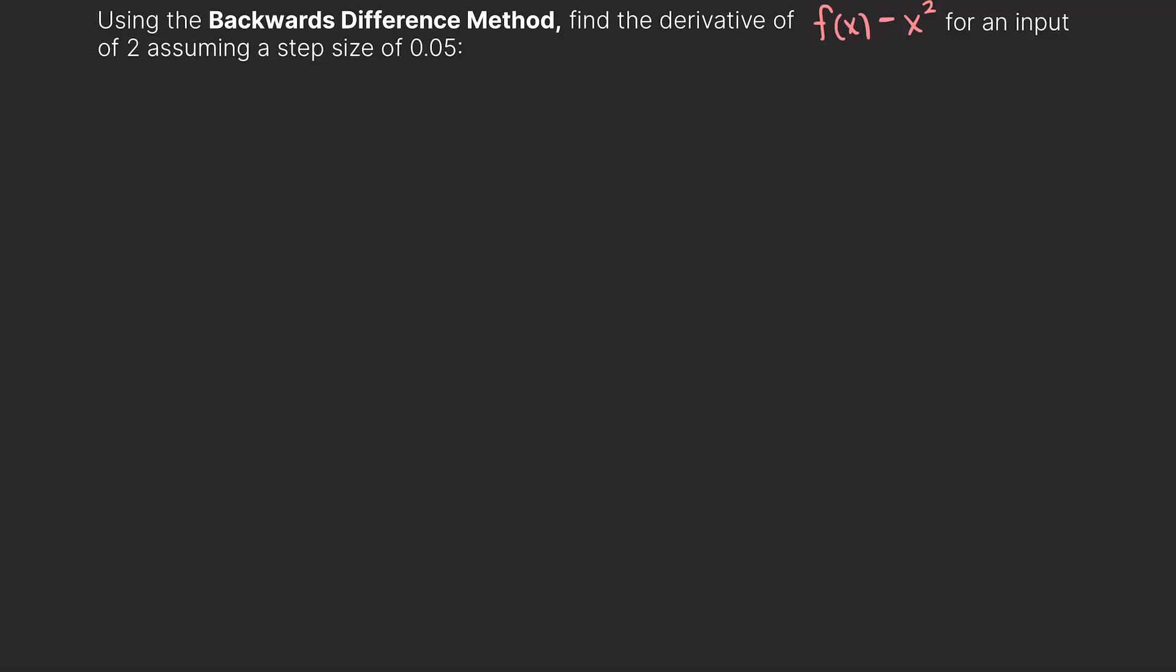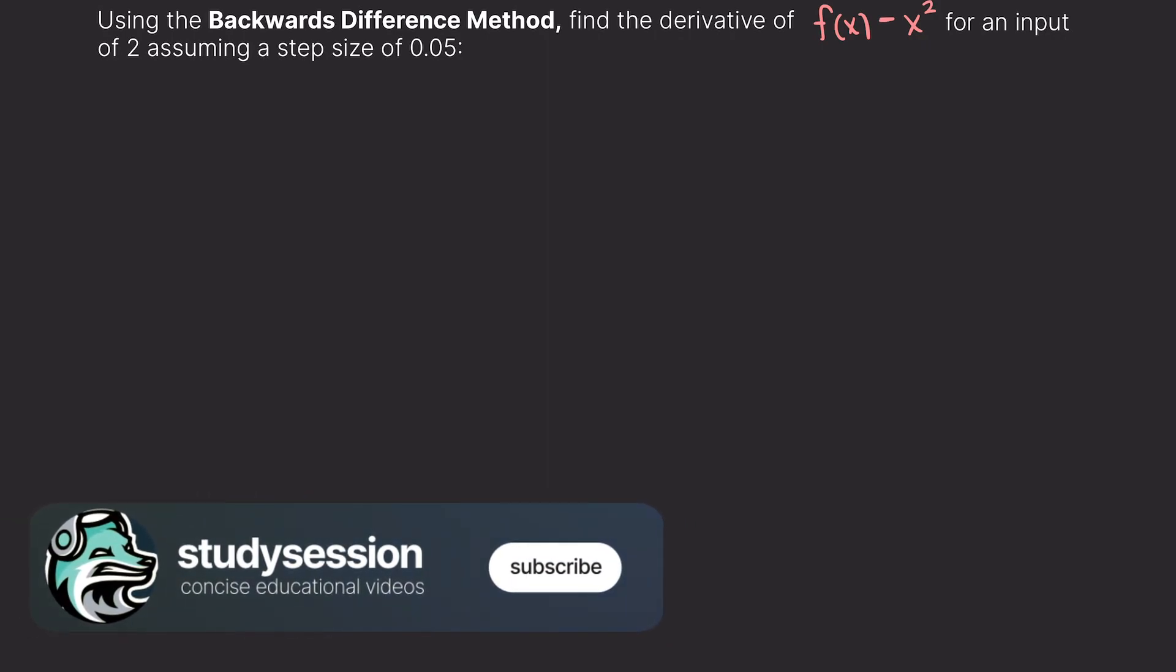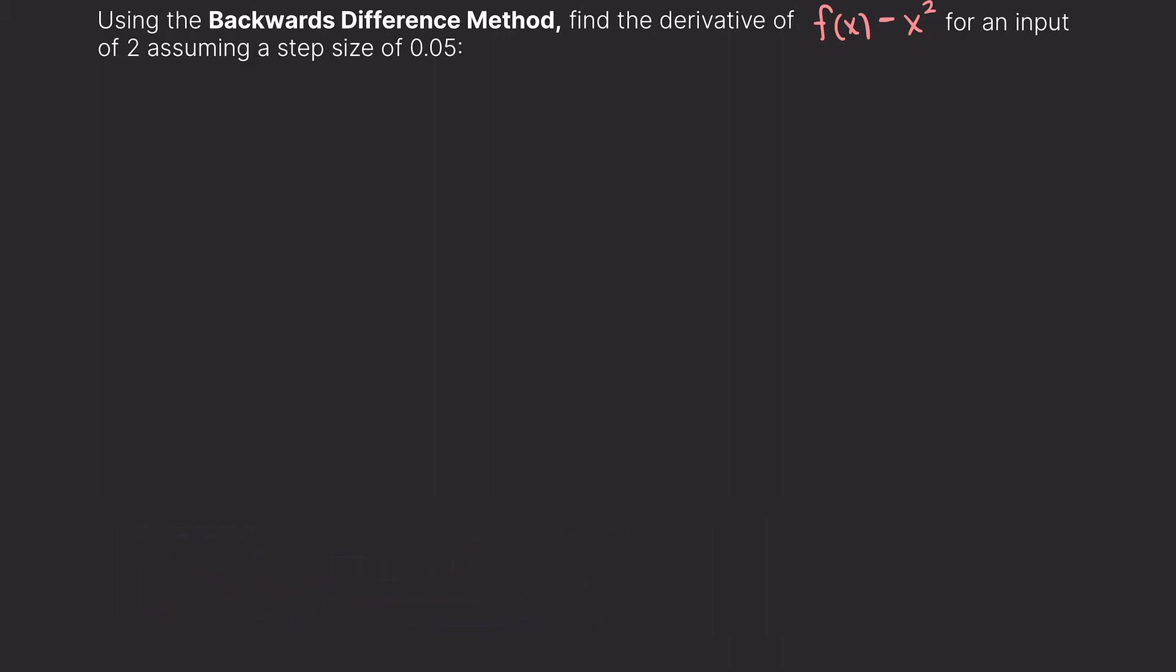Let's get into the first problem now. We are given the function f(x) = x². We are asked to approximate the derivative of this function at x = 2 using the backwards difference method. We are also told to use a step size of 0.05.